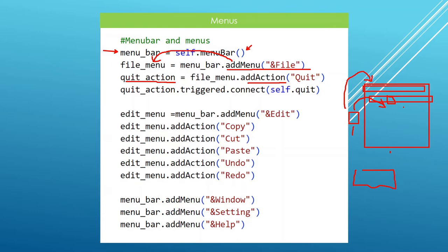You can connect the action to a method that does things in your Qt application, and you don't have to duplicate your code for the menu bar or toolbar. For example, whenever the triggered signal is emitted by QAction — you can check this in the documentation — we will call a method called quit_app, which will quit our application.